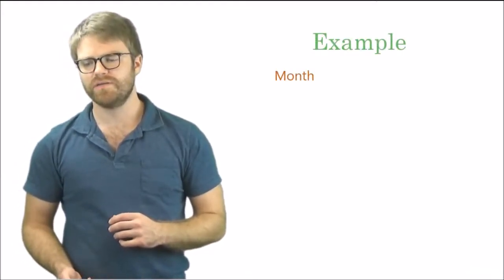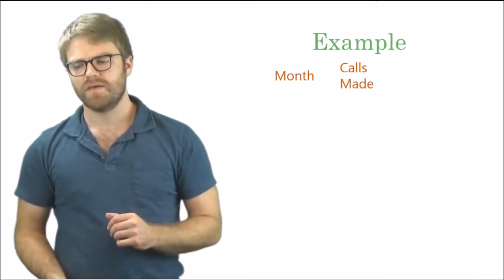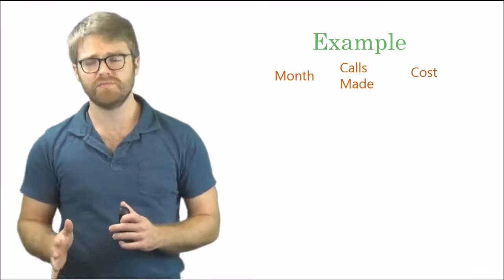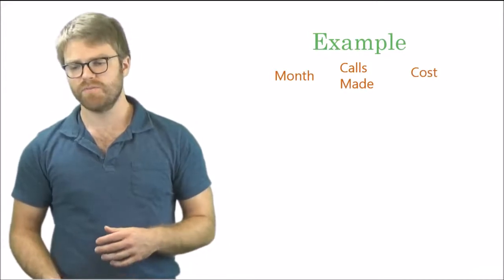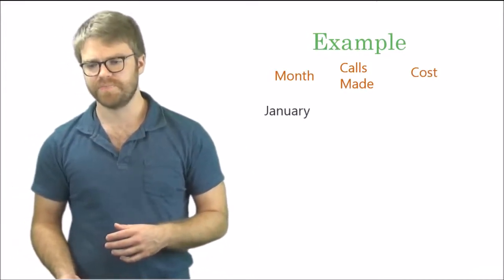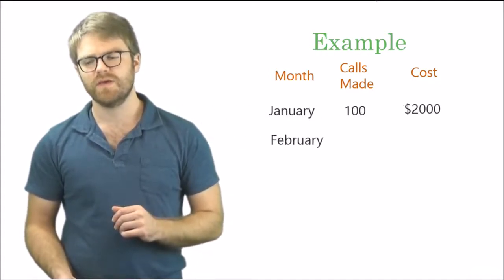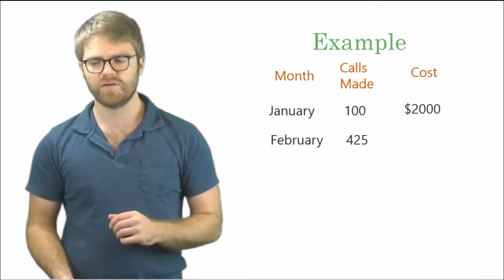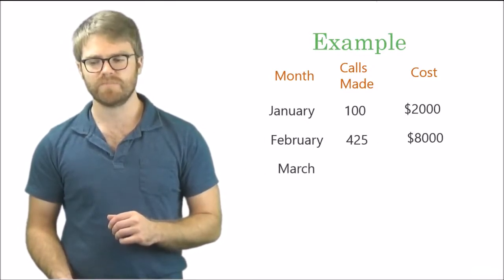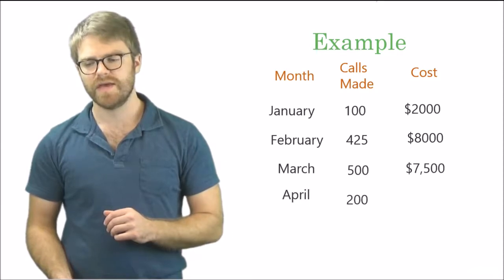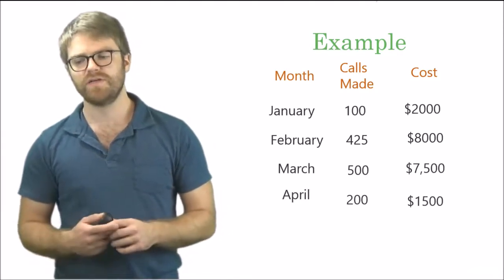Let me set up an example. Here are the columns you need: Month, Calls Made, and Costs. Calls made will be your activity; costs will be your costs. For January you have 100 calls made and $2,000. February: 425 calls and $8,000. March: 500 calls and $7,500. April: 200 calls and $1,500.